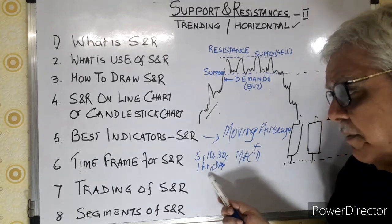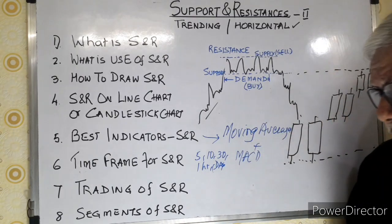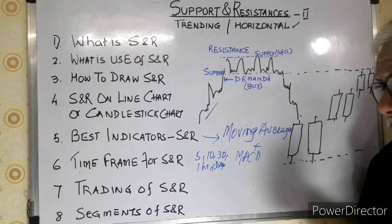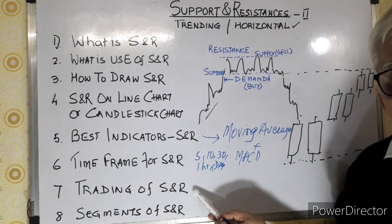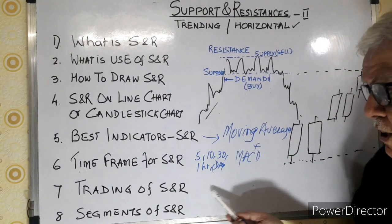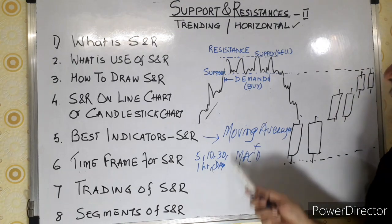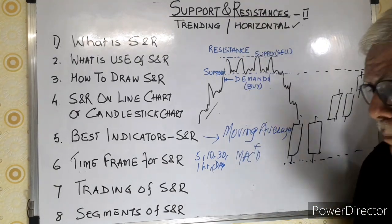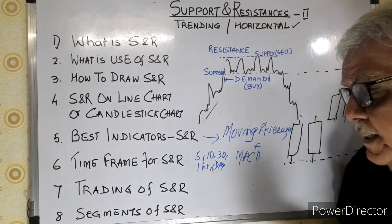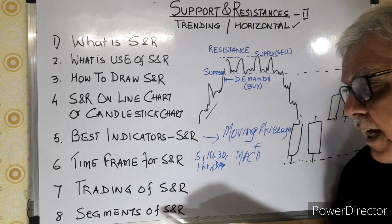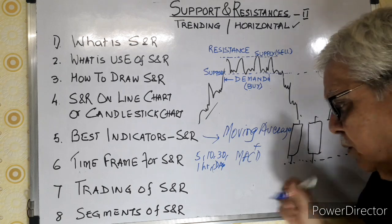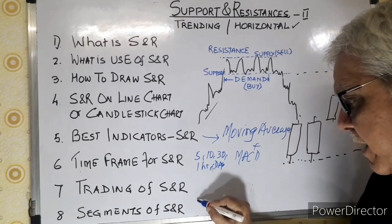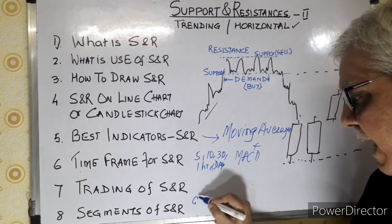Trading can be done with intraday, swing, or positional strategies using support and resistance. The market segments where this applies include F&O and cash equity markets.